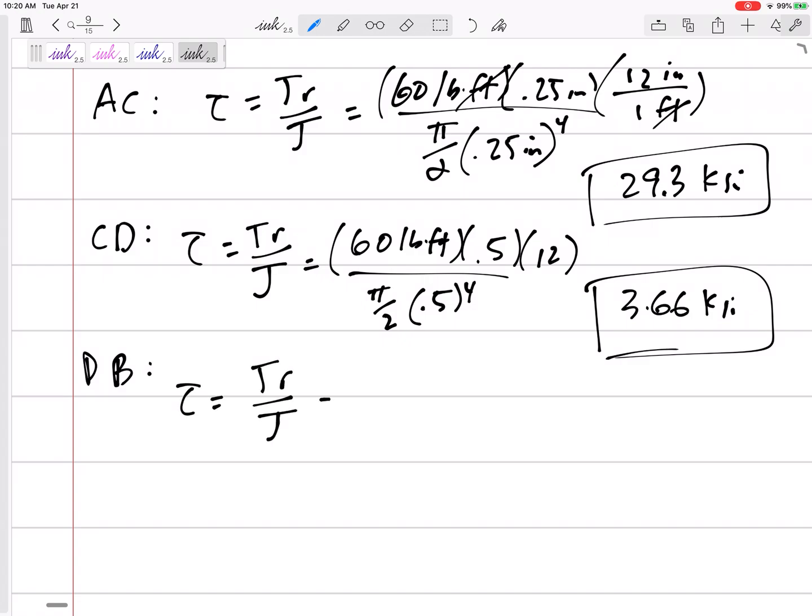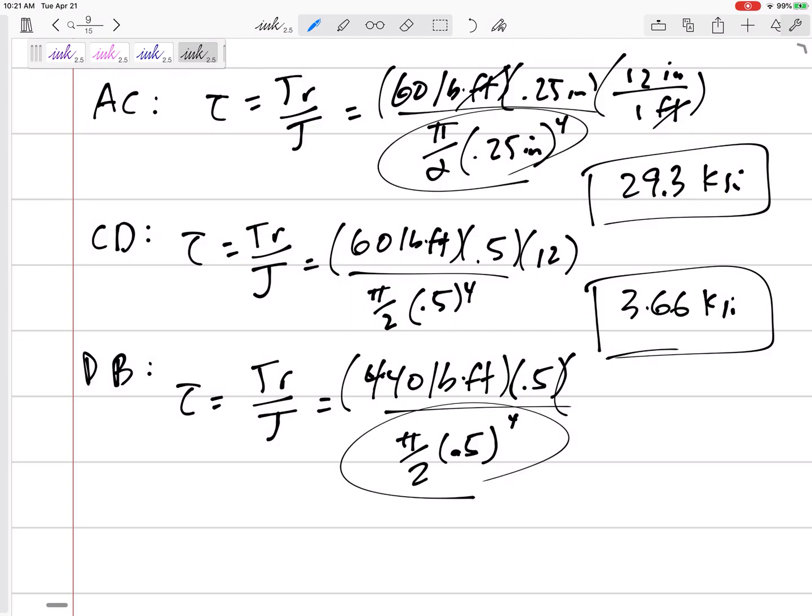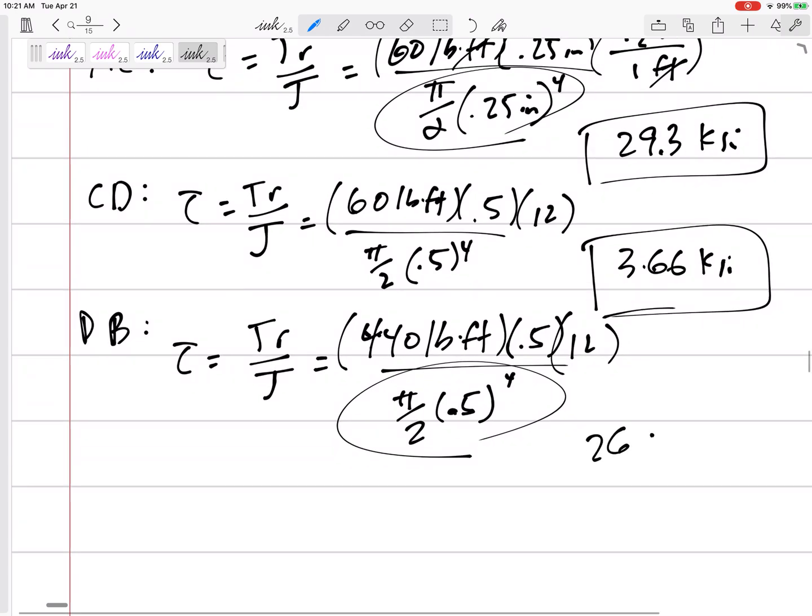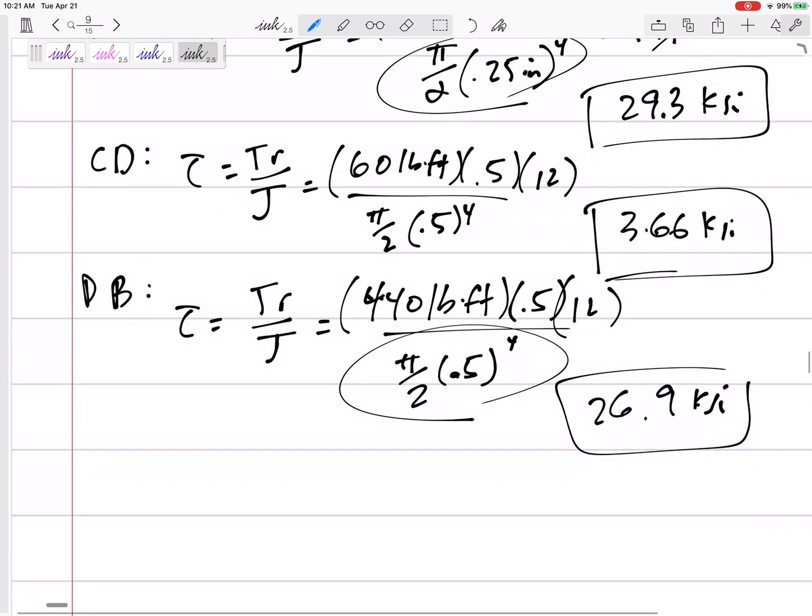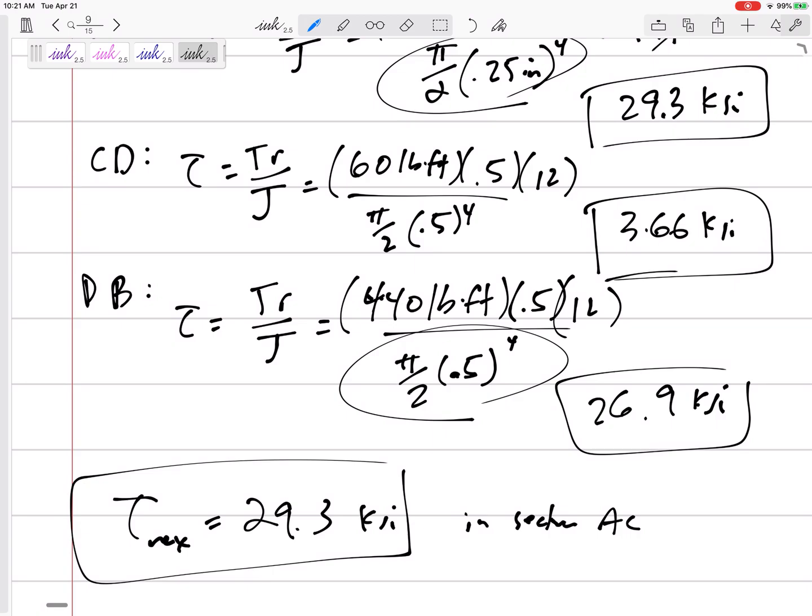How about section DB? TR over J, 440. So maybe this one is largest because of that larger torque, but it has a larger radius. And so this J down here, pi by 2, 0.5, and I'm doing 0.5 to the 4. It's really different from 0.25 to the 4th. I had a conversion factor of 12. This would be 26.9 ksi. So, hey, where's the maximum shear stress anywhere? Tau max is 29.3 ksi, and it occurs inside section AC. But I needed to test out all the sections just to see where the maximum stress would occur.